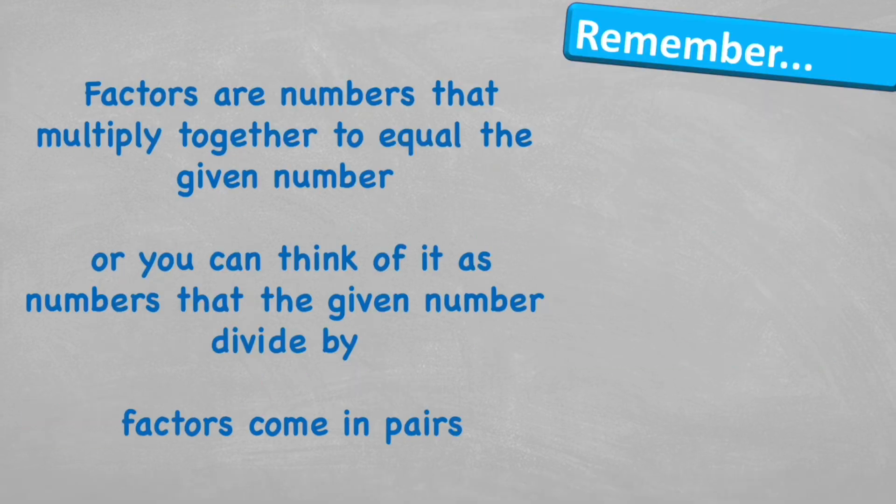Factors are numbers that multiply together to equal the given number, or you could think of it as numbers that the given number divide by. And factors come in pairs. But when we're trying to find the common factors, we're looking for factors that are in both sets.